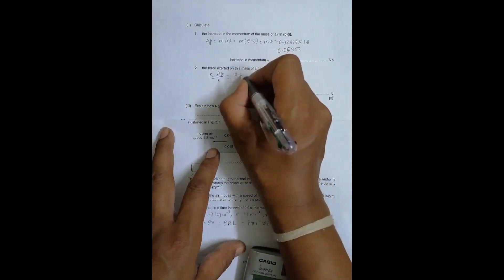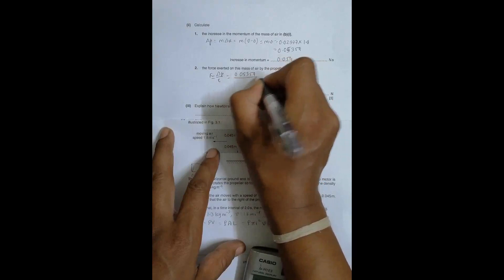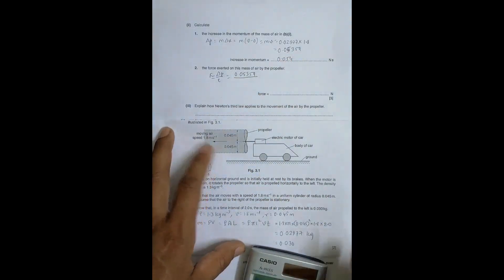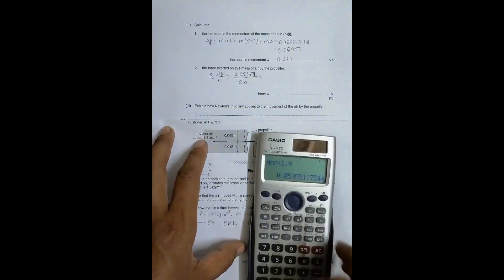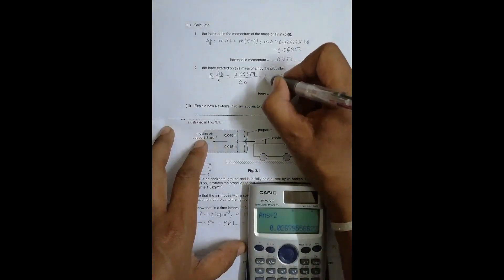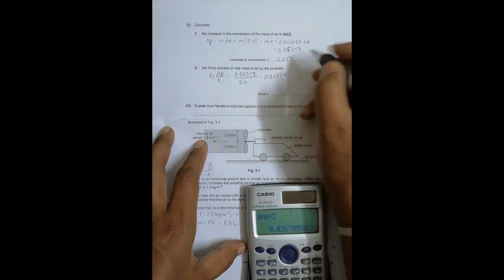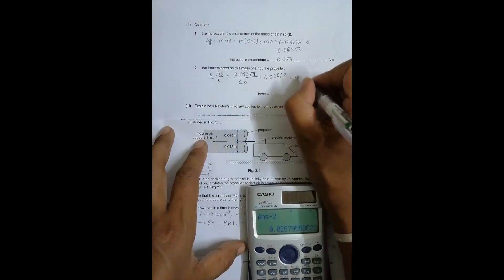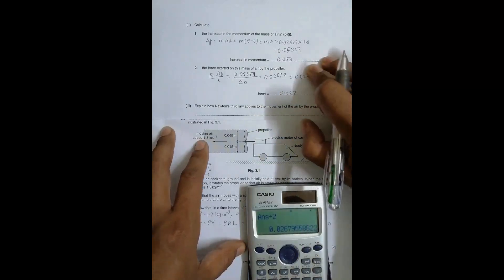Now the force is equal to delta p by time, rate of change of momentum. So delta p is equal to 0.05359 and the time is equal to 2.0 seconds. So it will be equal to, divided by 2, equal to 0.02679. In two significant figures it will be equal to 0.027 newton.